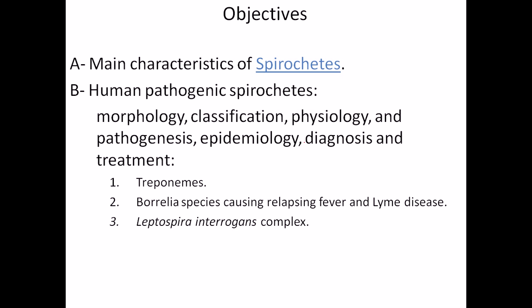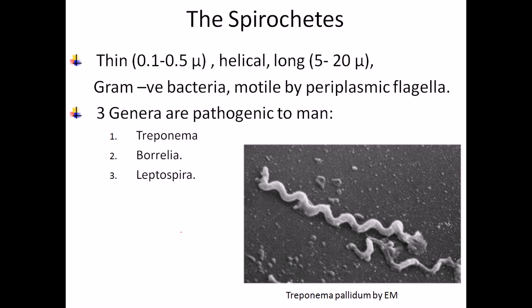There are three types of spirochetes. Treponema causes the disease syphilis. Borrelia species cause relapsing fever and also Lyme disease. Leptospira causes a different set of diseases which we will see later.